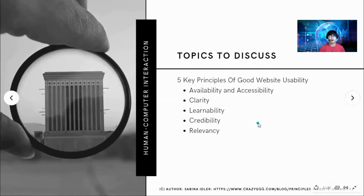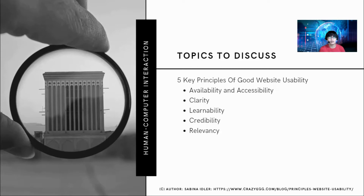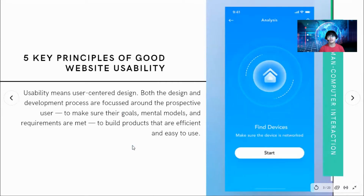Our topics again: the five key principles of good website usability. We will discuss availability and accessibility, clarity, learnability, credibility, and relevancy. Credits to the author Sabina Edler for this great content. So, what is usability? Usability means user-centered design — both the design and development process are focused around the prospective user to make sure their goals, mental models, and requirements are met, to build products that are efficient and easy to use.